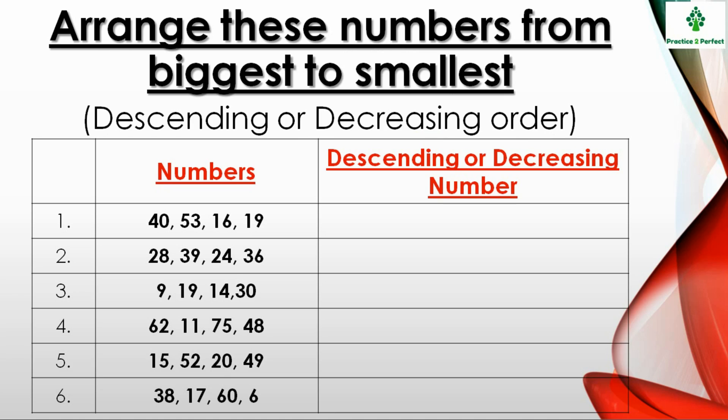This is the reverse of ascending order. Here you have to arrange the numbers in decreasing order, that is from big number to small number. And this is also known as the descending order of numbers.